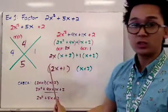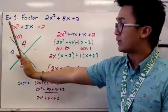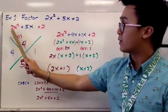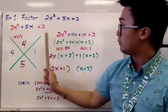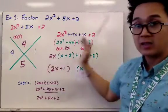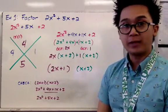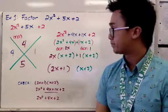So we have two stages: stage one is finding the factors of the product of the first and last terms, and stage two is factoring by grouping using the GCF.